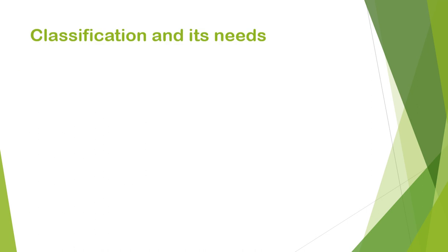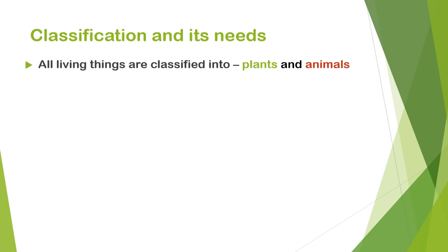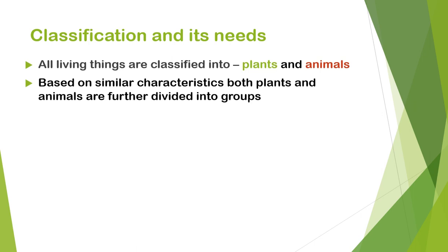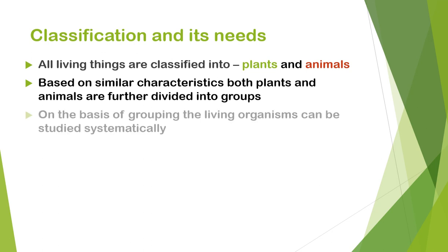Classification and Needs: All living things are classified into plants and animals. Based on their similar characteristics, both plants and animals are further divided into groups. On the basis of grouping, the living organisms can be studied systematically.